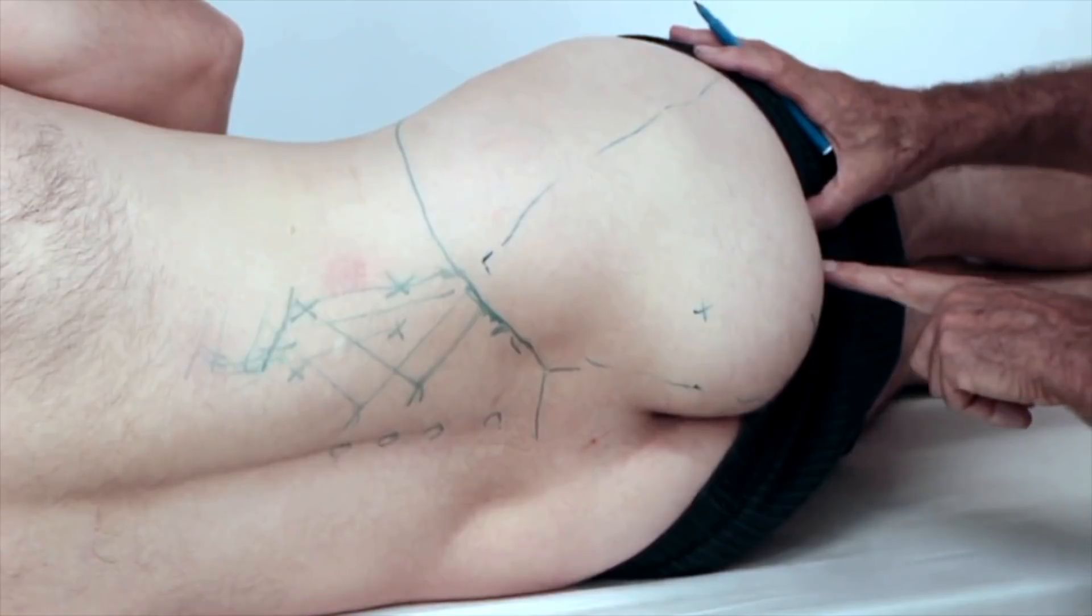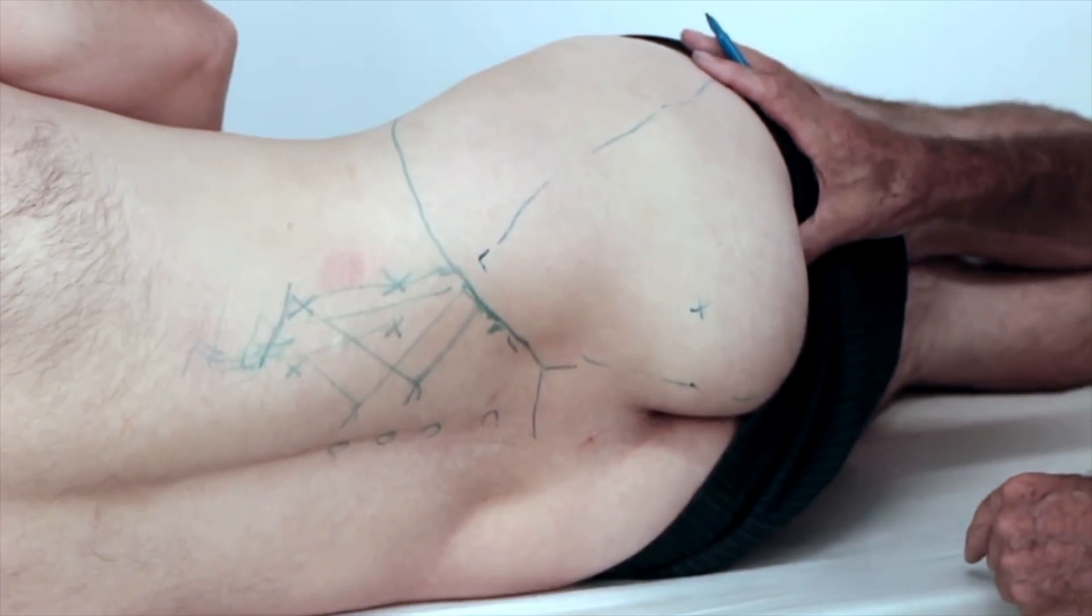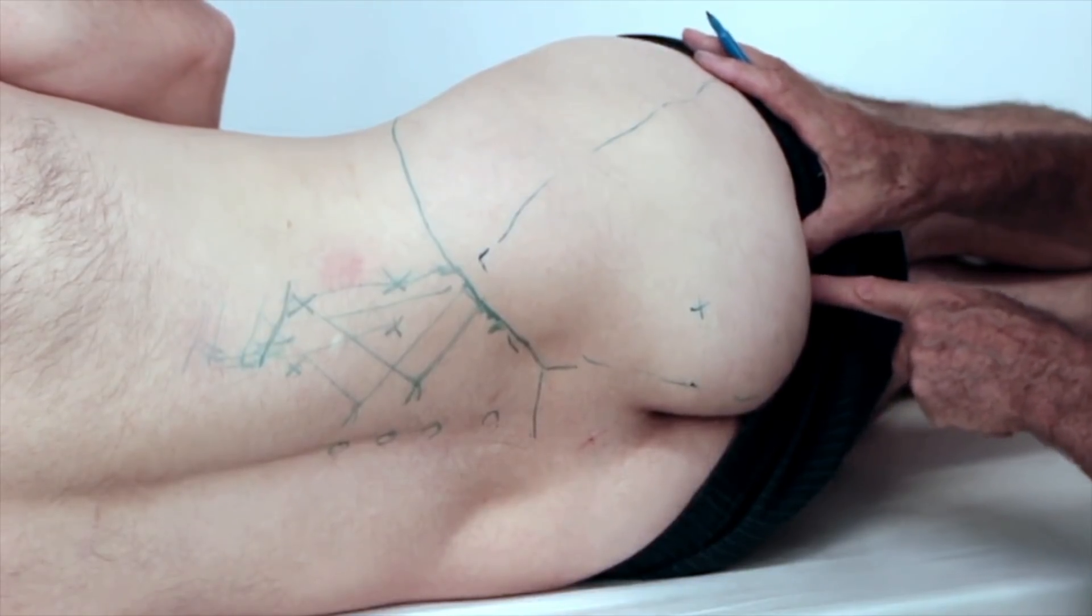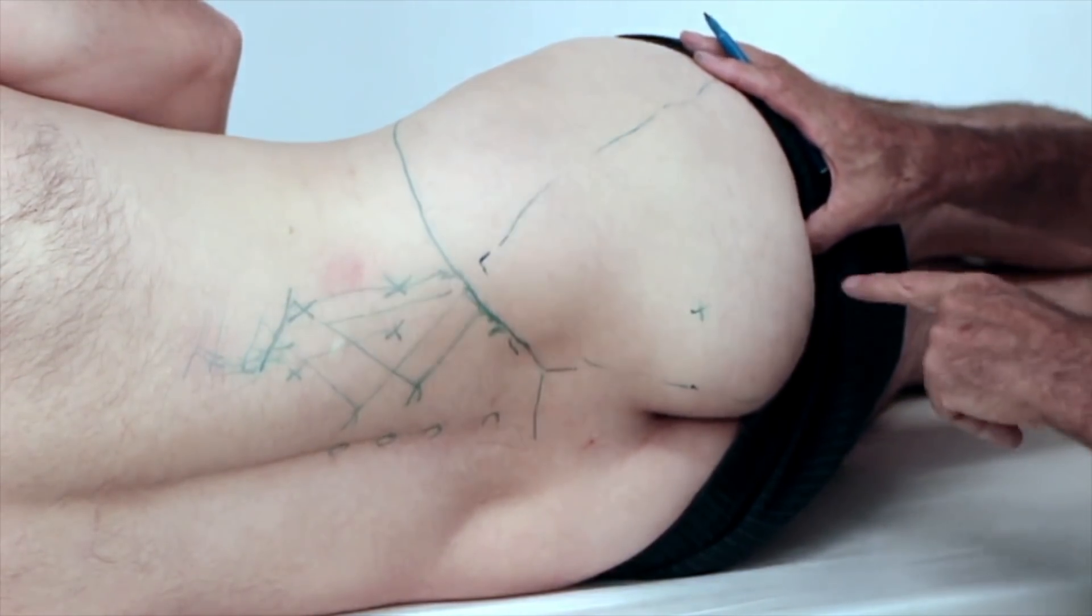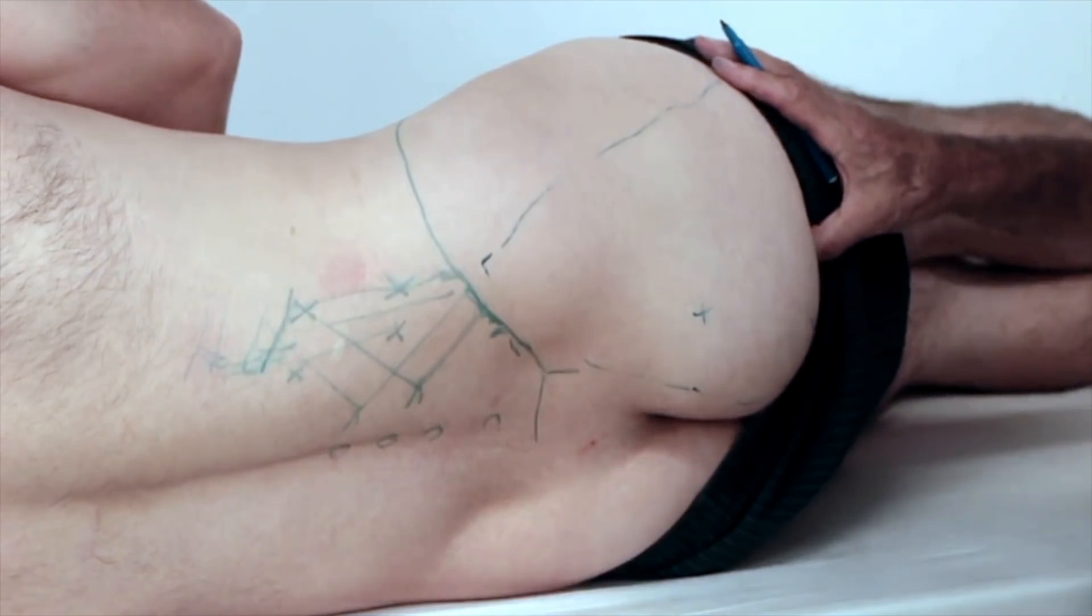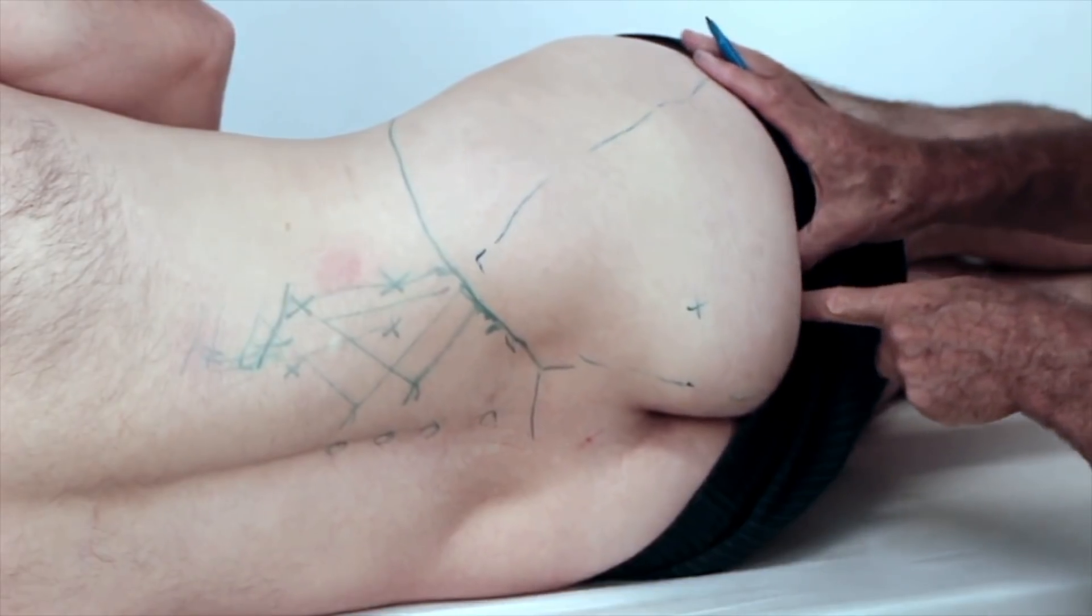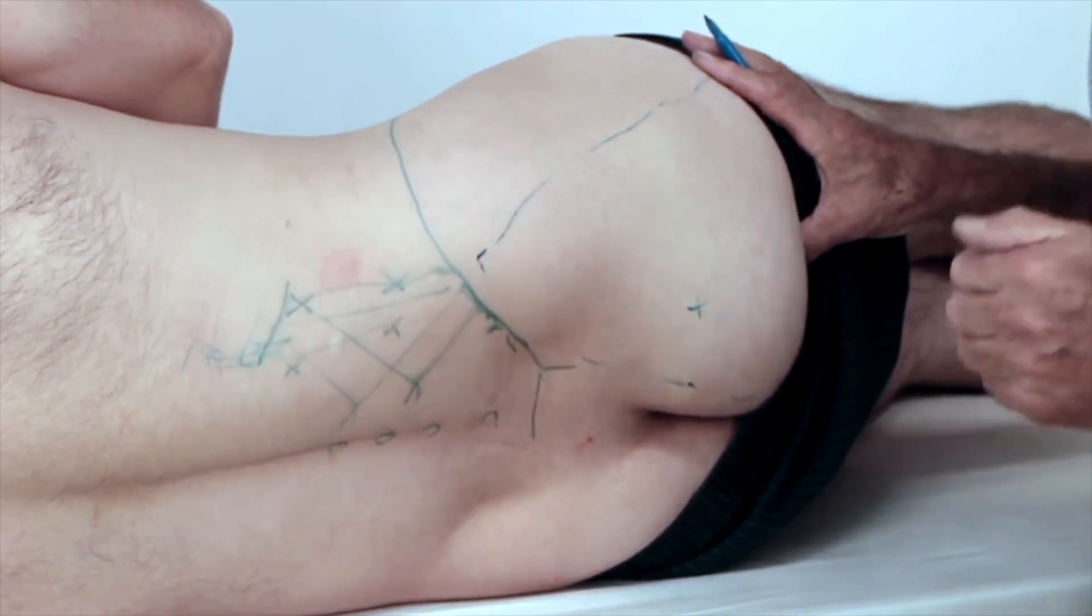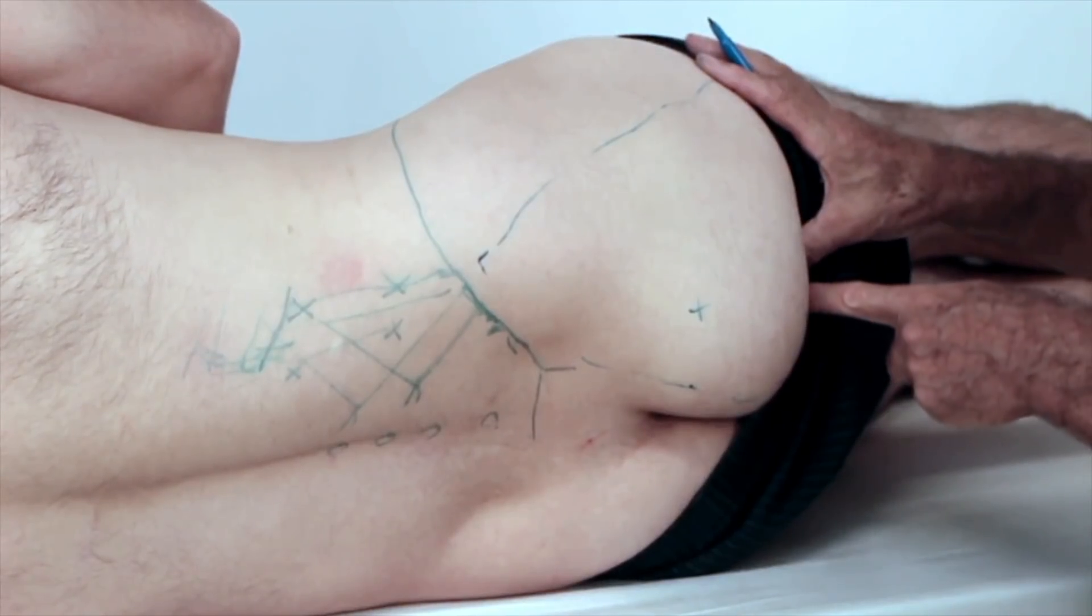This trigger sits over the sitting bone, the ischial tuberosity. One of the symptoms of trigger points in the glute max is that it's really uncomfortable to sit, because this trigger gets squeezed onto the ischial tuberosity.